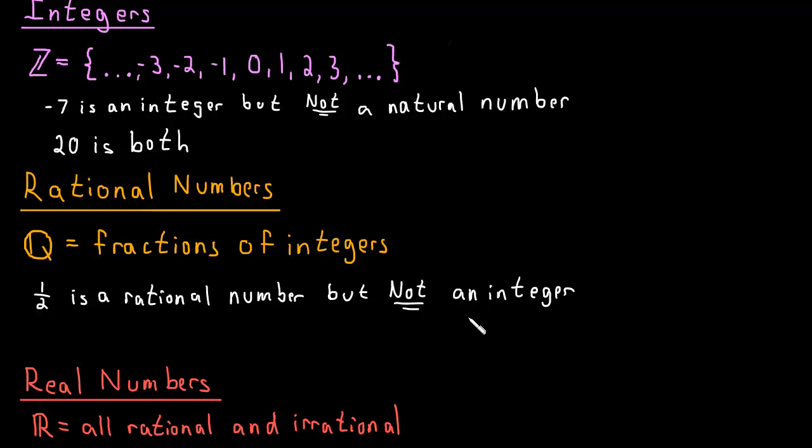Now can you think of any examples of a number that is both a rational number and an integer? Well, 5 is both. Why? Think about it. 5 is definitely an integer, and a natural number for that matter.